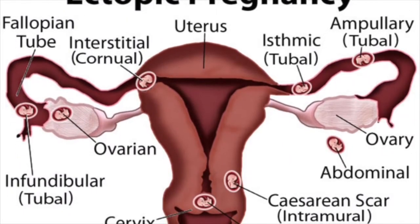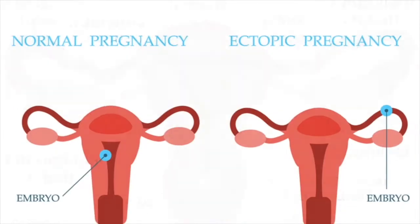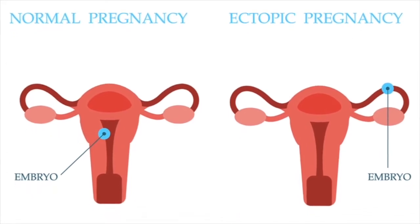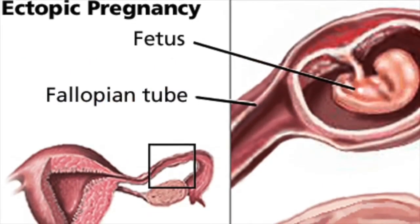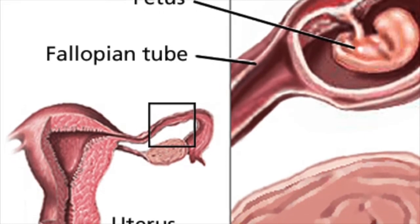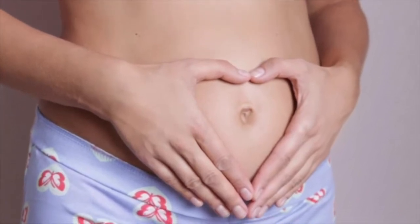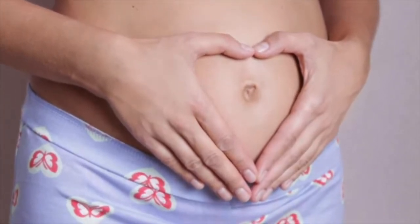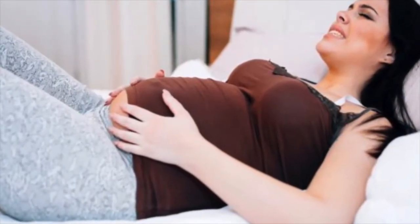What is ectopic pregnancy? An ectopic pregnancy occurs when the fertilized egg attaches itself in a place other than inside the uterus. Almost all ectopic pregnancies occur in the fallopian tube and are thus sometimes called tubal pregnancies. The fallopian tubes are not designed to hold a growing embryo, so the fertilized egg in a tubal pregnancy cannot develop properly and must be treated. An ectopic pregnancy happens in 1 out of 50 pregnancies.